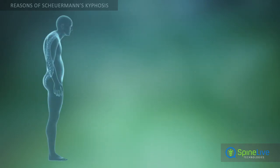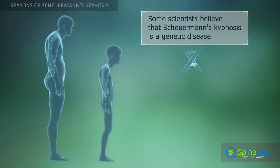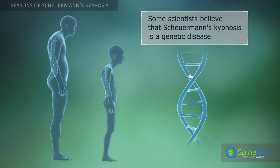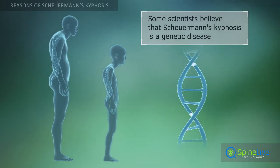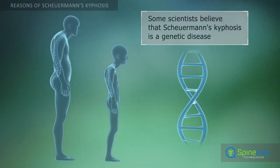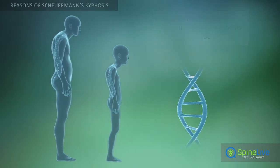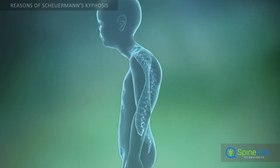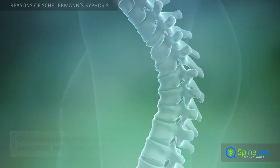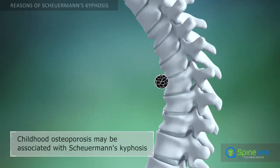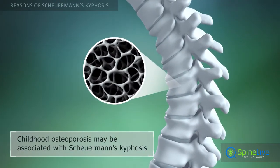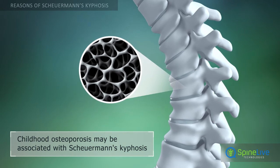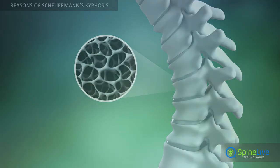Many scientists believe that Scheuermann's kyphosis is a genetic disease, which is inherited by children from their parents. One scientific study revealed mild osteoporosis in some young people who were affected by Scheuermann's kyphosis.